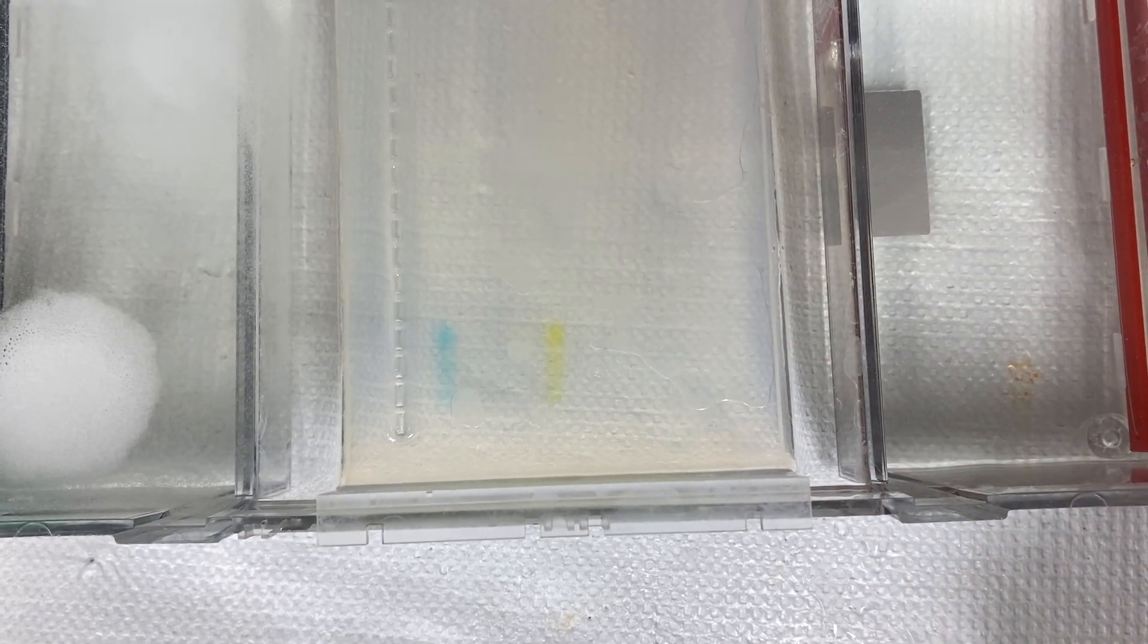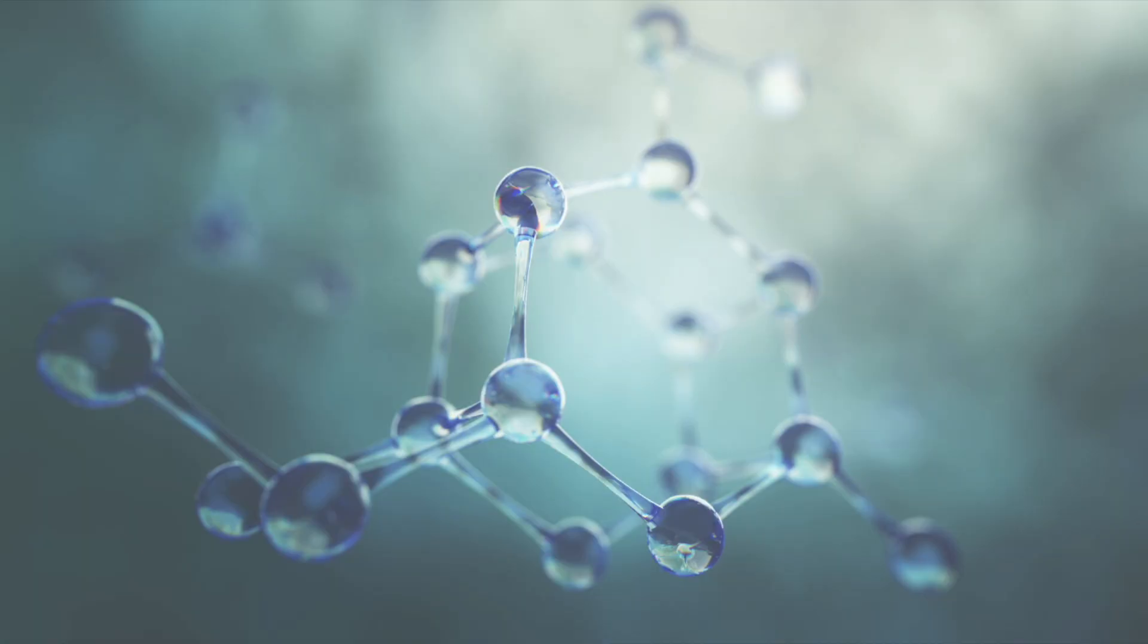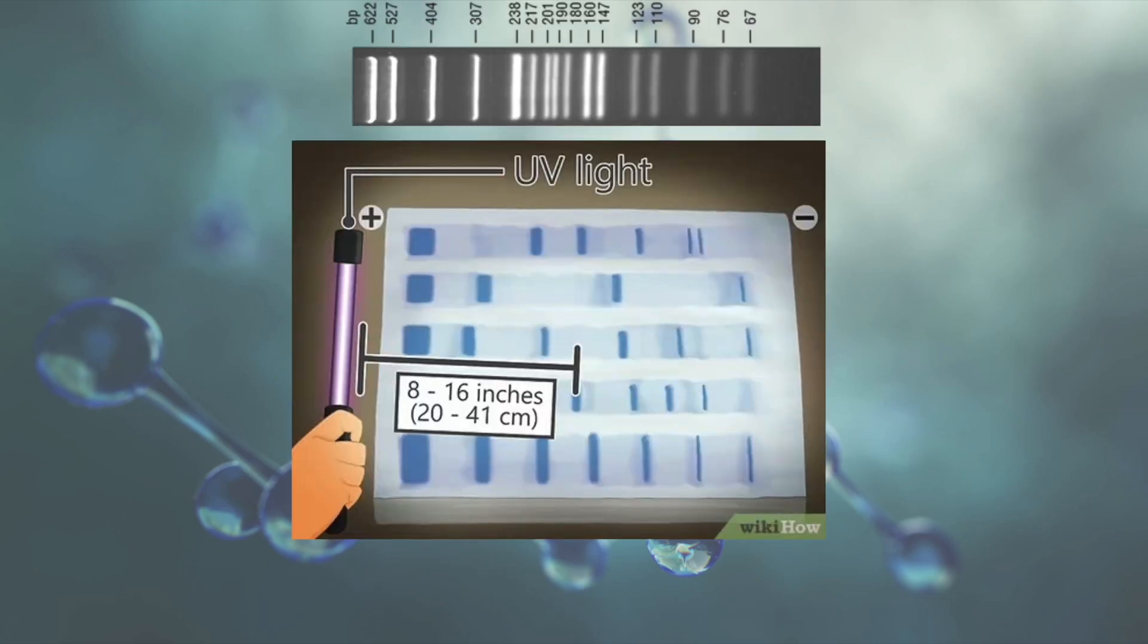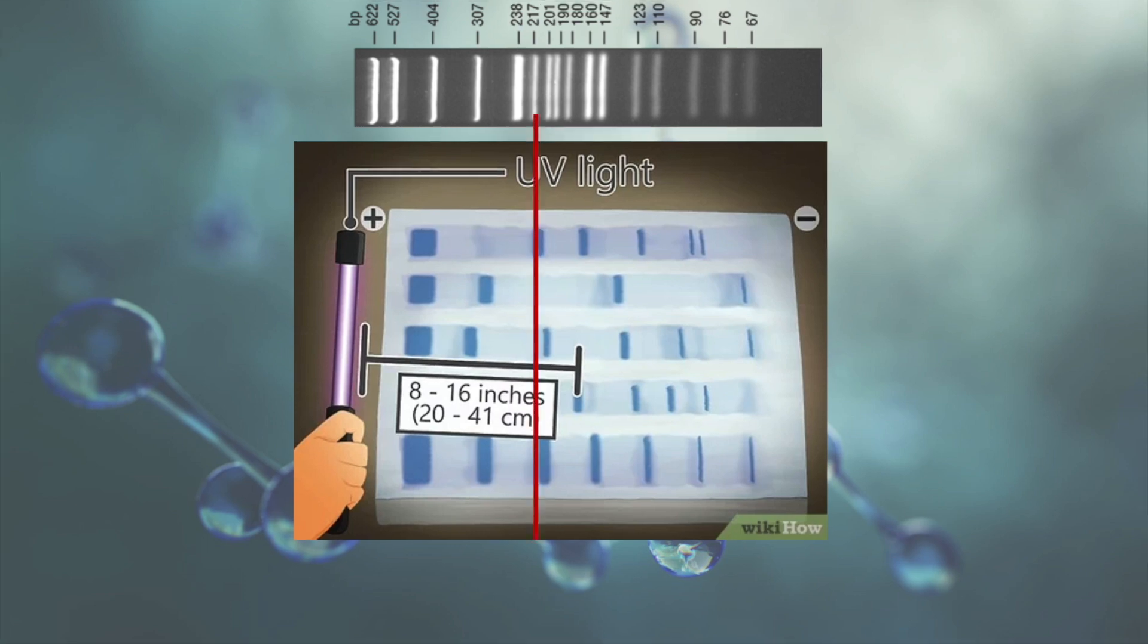Now at this point you might be thinking, okay, I see some lines, but what does that mean? The bands don't actually mean anything on their own, but when you add a UV light and compare it to an identified set of DNA, referred to as a ladder, you can make conclusions about what the genes you are looking at actually are.